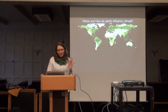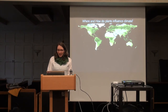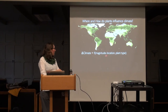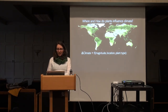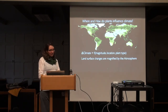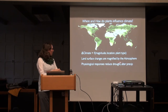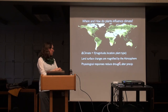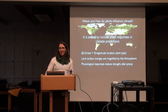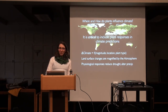In summary: the climate response to land surface changes depends on the magnitude, location, and plant type involved. Land surface changes are amplified by the atmosphere. Plant physiological responses reduce drought occurrence and alter precipitation. The main take-home is that it's critical to include plant responses in our climate predictions and to think thoughtfully about how they're influencing climate impacts we're estimating for the future.